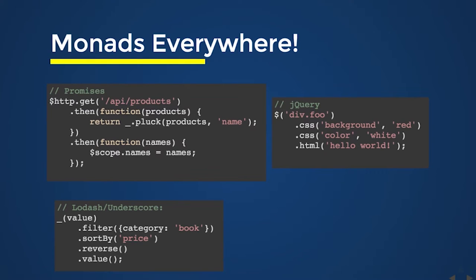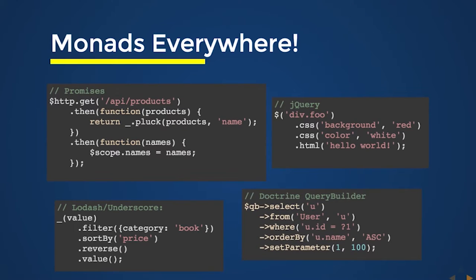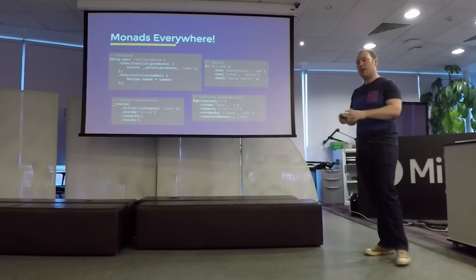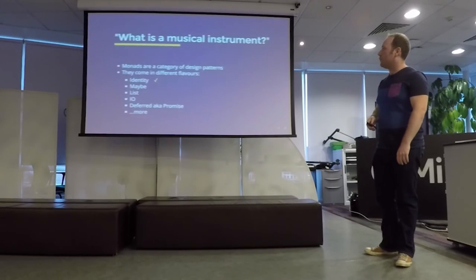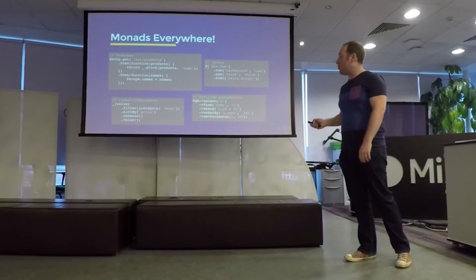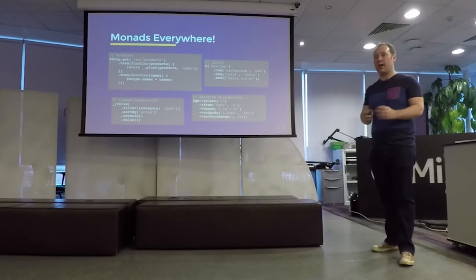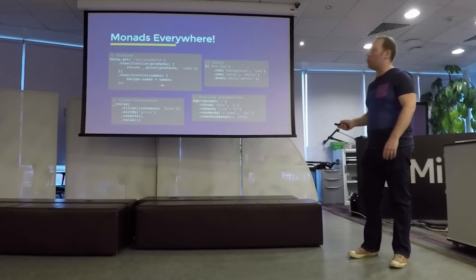Lodash and Underscore are two really powerful libraries for doing functional-style programming in JavaScript. If you've got some kind of array of objects, you can filter those objects, sort them, reverse them after the sort, and then get the result back out. And also PHP has something similar — looking at something like Doctrine's query builder, you specify a table and some clauses and then run that query. Although it may not look like it, it's exerting some Monad-style behaviour. We've been writing code like this for years, working with libraries that do this, using Monads all the time without having to understand Haskell or category theory or what a monoid or endofunctor is. We just write code that seems sensible.